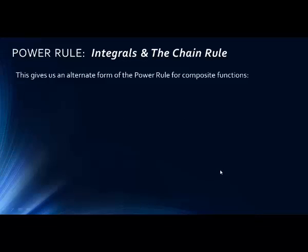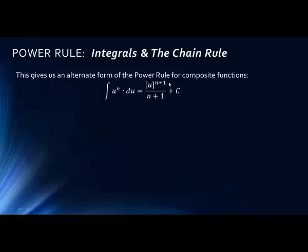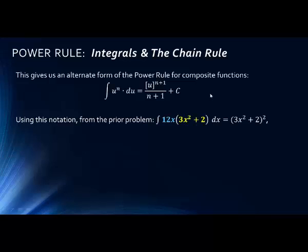This gives us an alternative form of the power rule, which we use specifically for composite functions. When we have a composite function raised to a power of n, and also have the derivative inside of the integrand, this simply equals — similar to the standard power rule — the entire function raised to the power of n+1, all over n+1, plus the constant of integration.